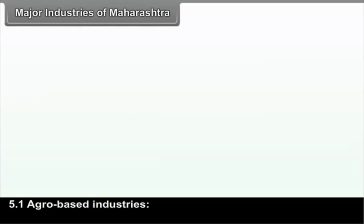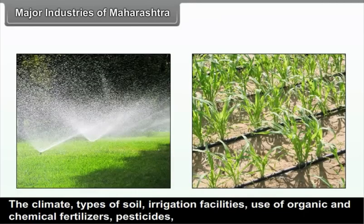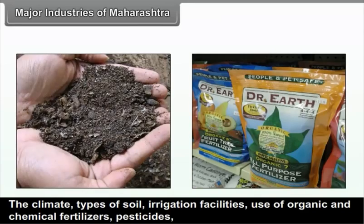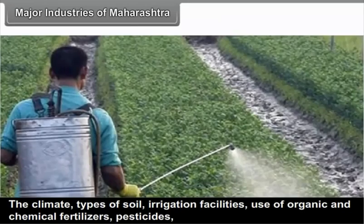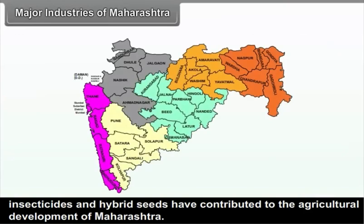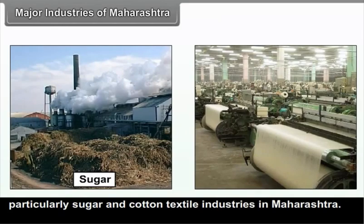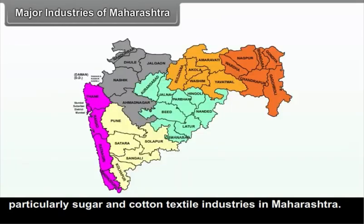The climate, types of soil, irrigation facilities, use of organic and chemical fertilizers, pesticides, insecticides and hybrid seeds have contributed to the agricultural development of Maharashtra. These resulted in increased agricultural produce, which led to the growth of agro-based industries, particularly sugar and cotton textile industries in Maharashtra.